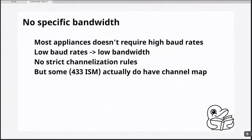By 'no specific bandwidth,' what do we mean? There is an equation that describes: if you want to send a signal with some baud rate — if you have some amount of data and you want to transfer it in a specific amount of time — you need a specific baud rate. The higher the baud rate, the more bandwidth you need. In most cases, if we're talking about Internet of Things sensors, they don't require a lot of bandwidth. Most of them will occupy really narrow space, and finding those spaces will be a little bit difficult, but not impossible.